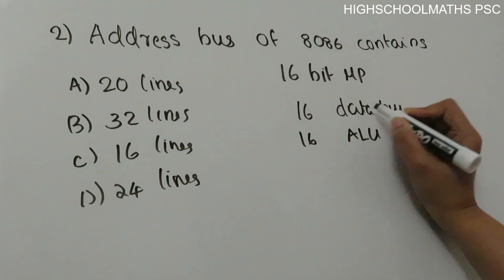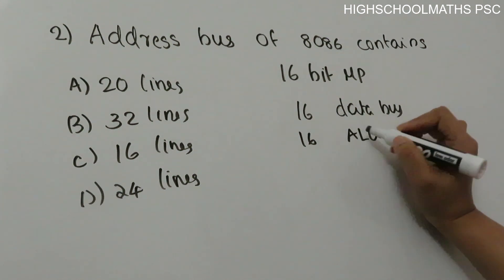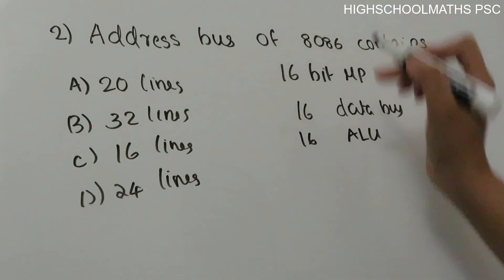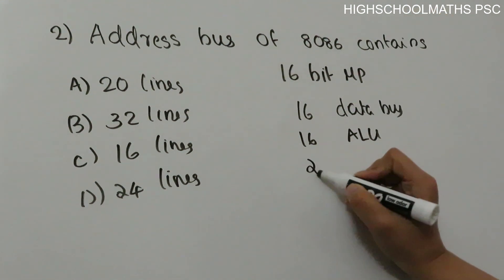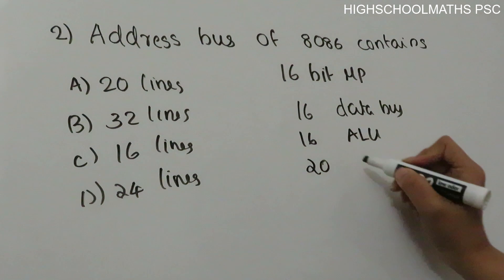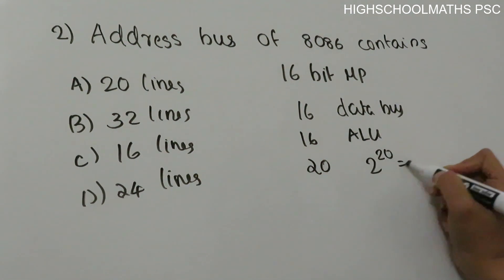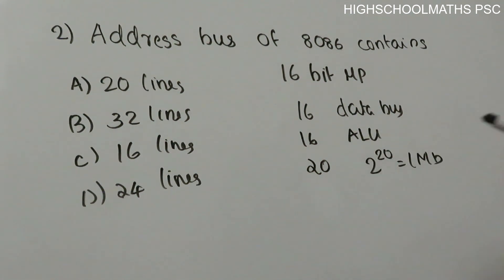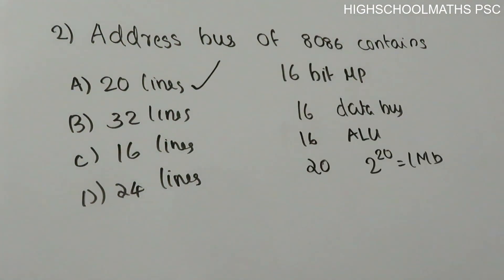At a time, it performs 16-bit data transfer, and the ALU processes 16 bits at a time. The address bus is 20 lines, meaning 2 raised to 20 gives 1 MB of addressable memory. Option A is the answer.